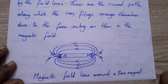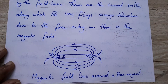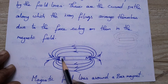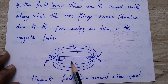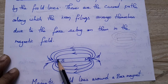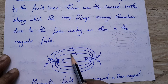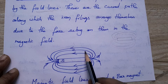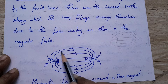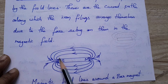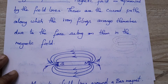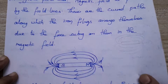This shows the magnetic field lines around the bar magnet. If you sprinkle iron filings, they will move and align themselves in this direction.